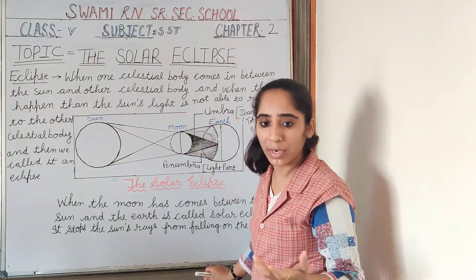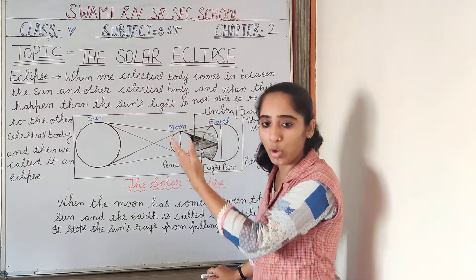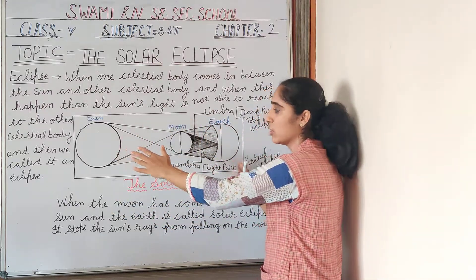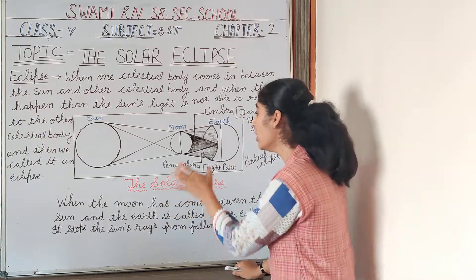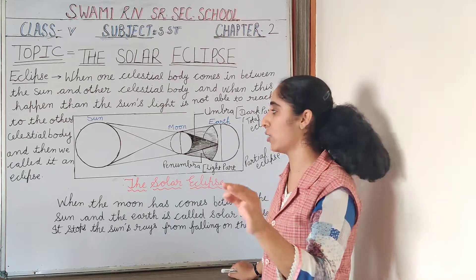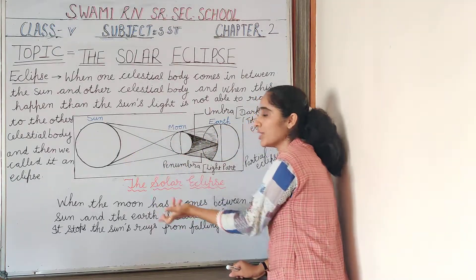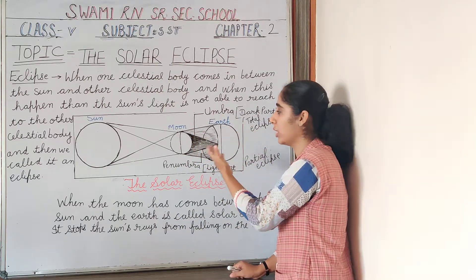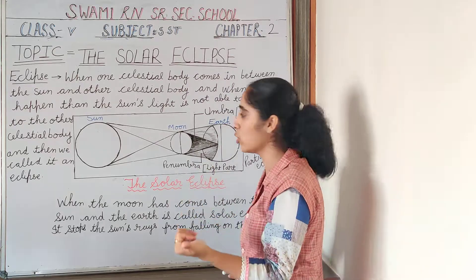The solar eclipse lasts only for a few minutes. Because after that, they both move away from the place, and then the eclipse does not happen. The earth revolves around the sun and the moon revolves around the earth, so they move away from this alignment, and then the solar eclipse does not happen.